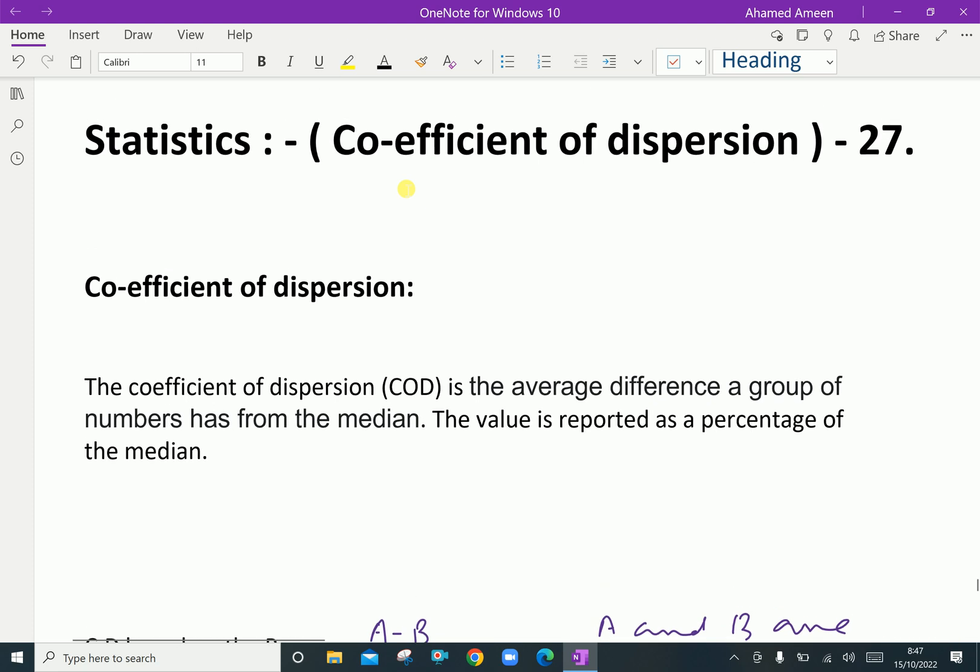Welcome to aminacademy.com. In statistics, let us discuss the Coefficient of Dispersion. The Coefficient of Dispersion is the average difference a group of numbers has from the median. The value is reported as a percentage of the median.